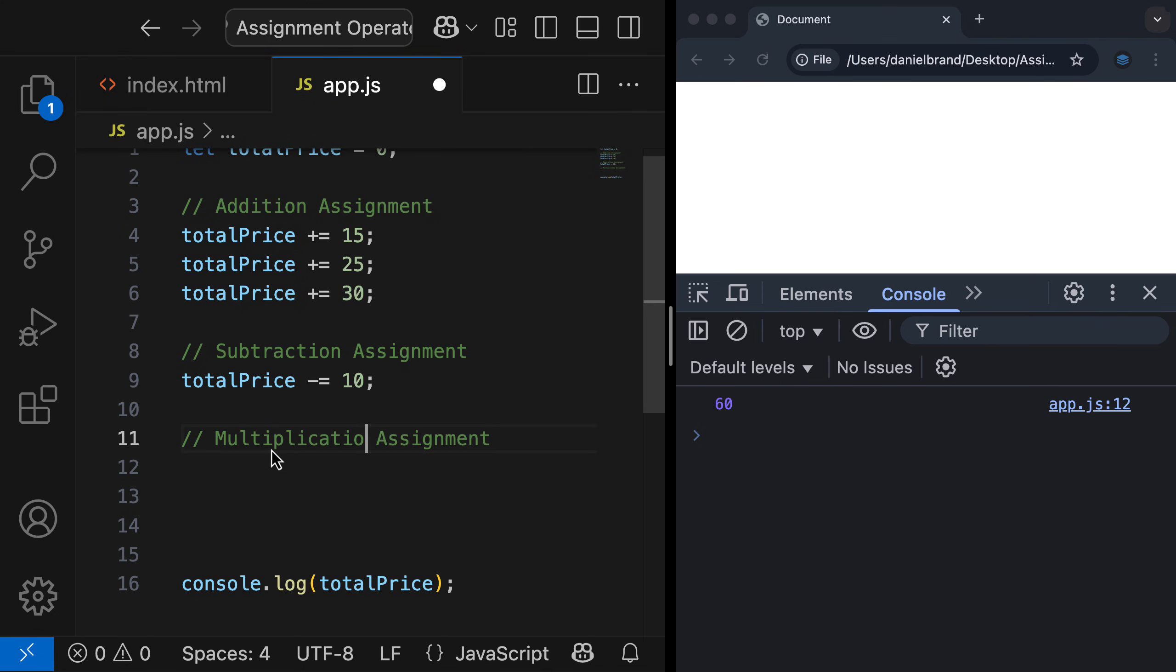For multiplication assignment, let's say we now need to add a 20% tax onto the total price. So we would do totalPrice multiplied equals 1.2. So this is multiplying the total price by 1.2, which adds 20% onto the total price. If I refresh, you'll now see the total price is 72.